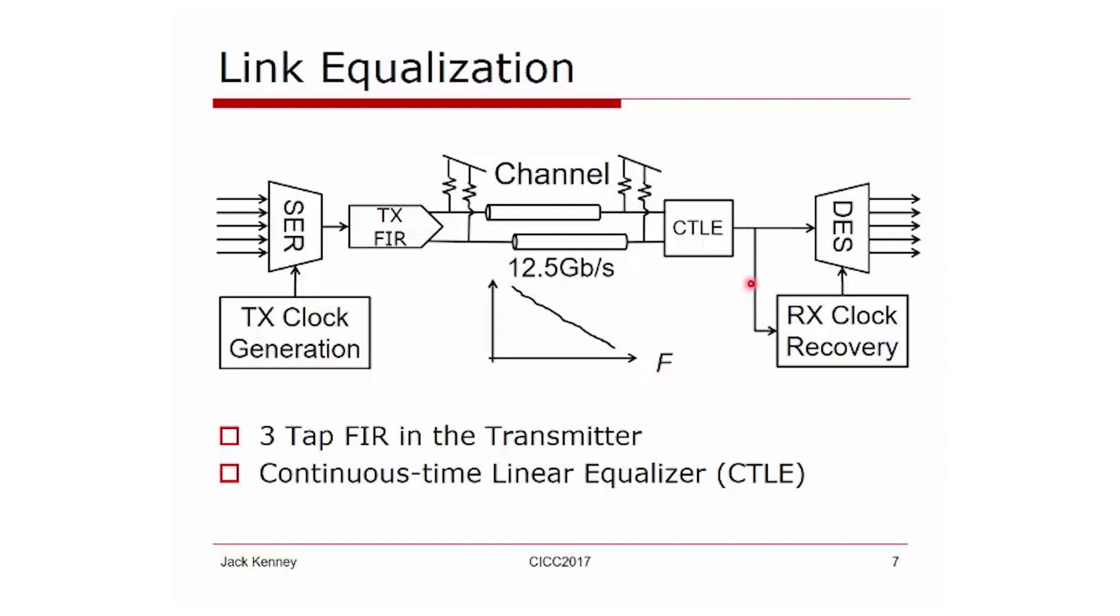Now we're moving on to the last topic, which is equalization. Your wires have some frequency-dependent loss, which I show in this characterization. In the serial links, we provision a three-tap FIR on the transmitter and a continuous time linear equalizer in the receiver to compensate for those losses.